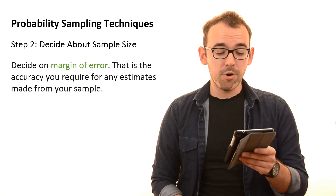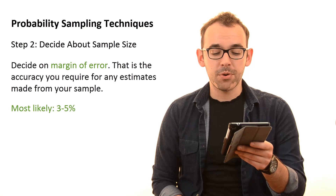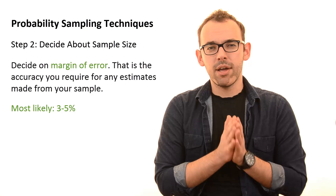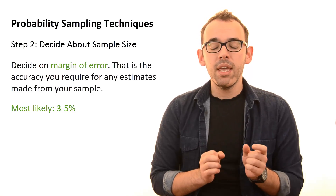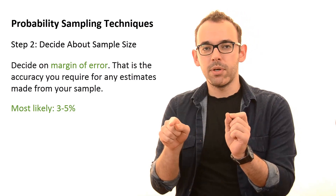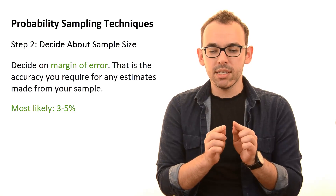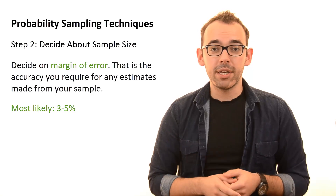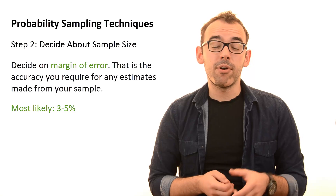Second, you need to decide about what we call margin of error — sometimes also called confidence interval. This is the accuracy you require for any estimates made from your sample. In reality it's quite simple and we hear it often on television. Let's say you are asking students whether they are happy or not happy with accommodation. If 47 percent said they are happy and your margin of error is 4 percent, you put minus 4 and plus 4 percent — meaning your result is that between 43 and 51 percent of students are happy. Researchers usually go for 3 percent or 5 percent margin of error.